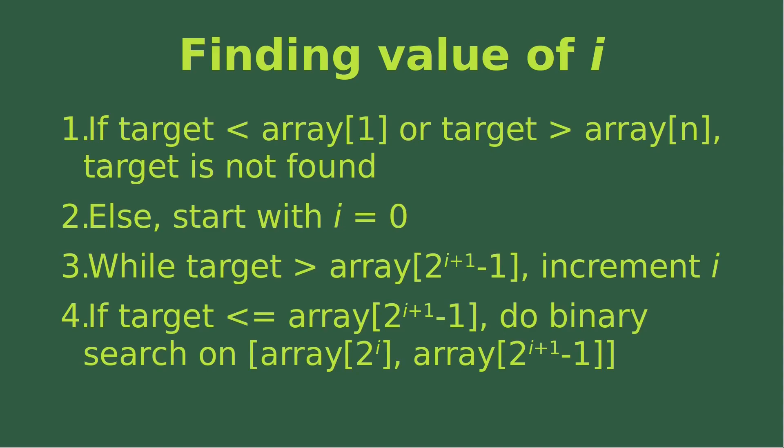Number four, if the target is smaller than or equal to the array element corresponding to the index 2 to the power of i plus 1 minus 1, we are able to do the binary search on the interval shown on the slide, which starts at the array element with index 2 to the power of i, and the ending element has an index of 2 to the power of i plus 1 minus 1.